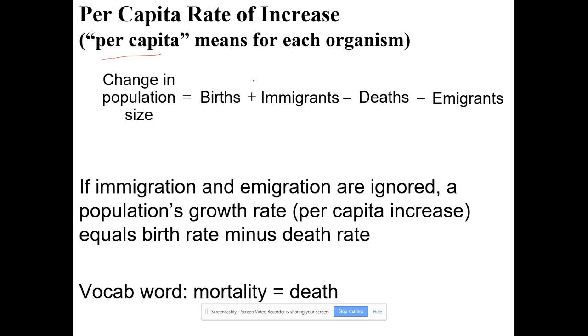Per capita rate of increase. Per capita means for each organism. And so a change in a population size is the births plus the immigrants minus those who are leaving due to either death or emigration. So you can write it like this. Or you can say birth rate plus immigration rate and subtract the death rate plus the emigration rate.